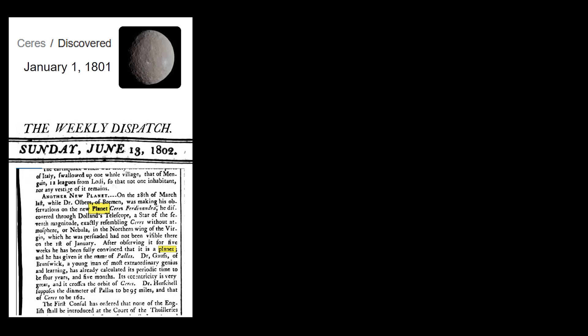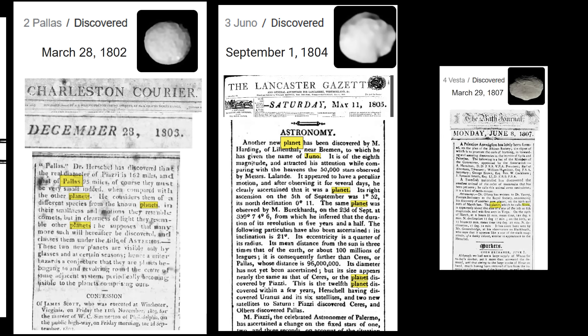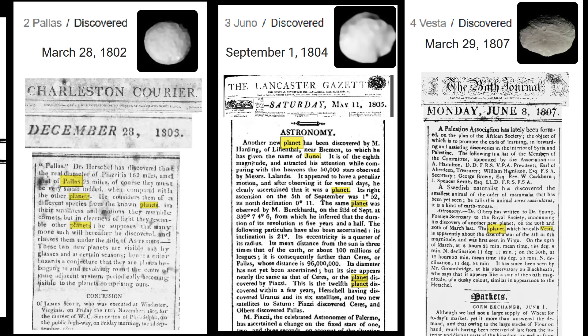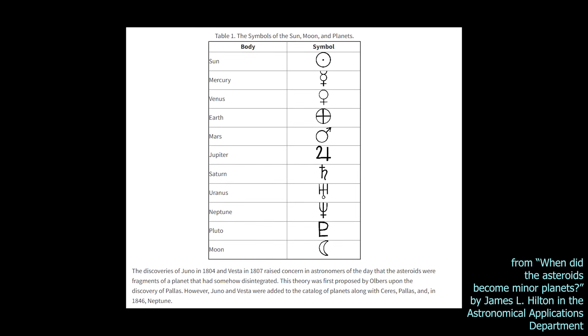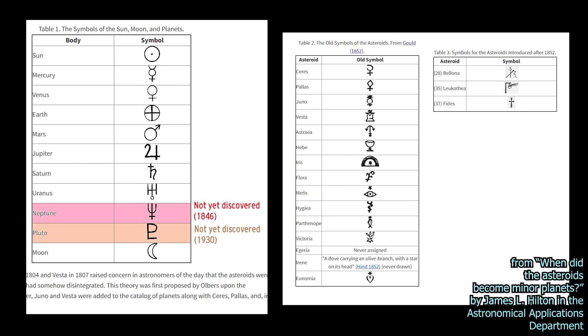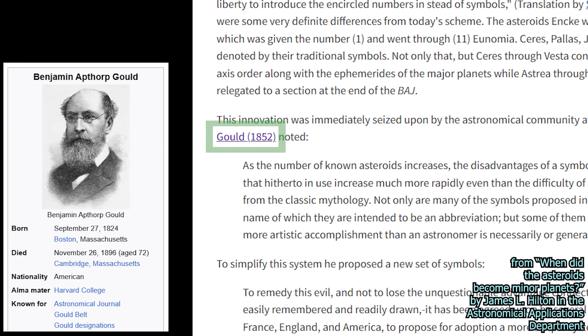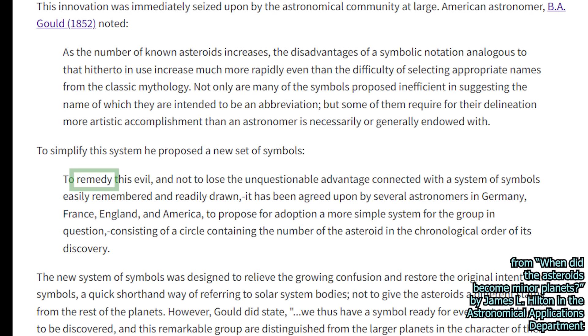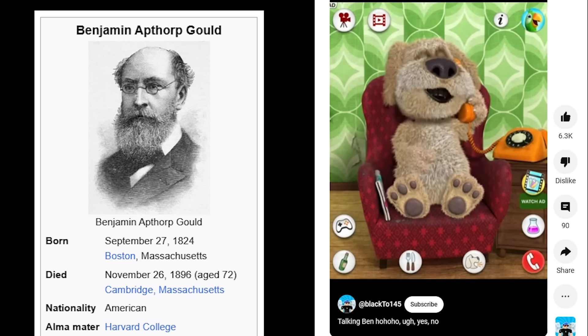So this flurry of asteroid discoveries happened in the very early 1800s. And at the time, society just considered them new planets like Saturn. But fun fact, according to James Hilton's article in the Astronomical Applications Department, people in the 1800s went from listing nine major celestial bodies with symbols to almost 30. I assume these were used for star charts and the like. But this raised concern in astronomers like Benjamin Gould, to the point that he called this overabundance of symbols an evil to be remedied. Wow, that's kind of harsh, Ben.